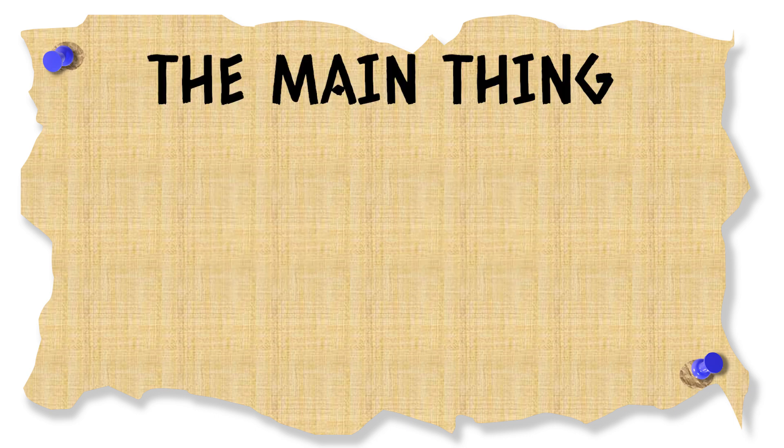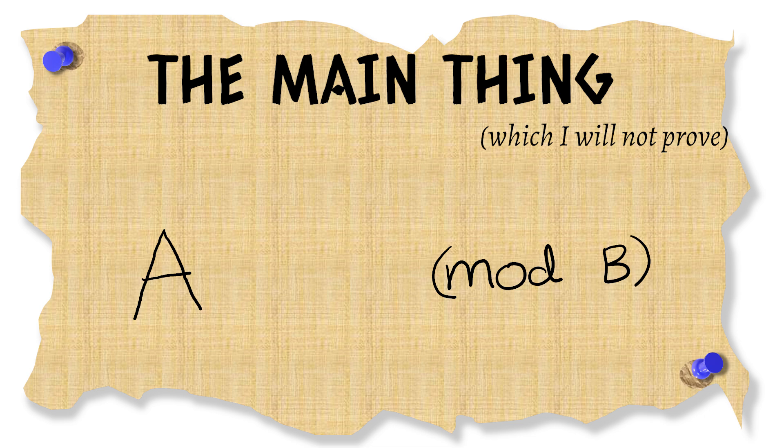For the algorithm the main thing that we'll need to know and which I will not prove in this video is that if you have an A modulo B then there is some number Z such that A times Z is congruent to 1 modulo B.